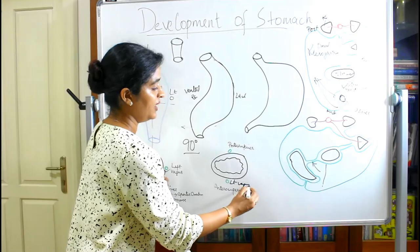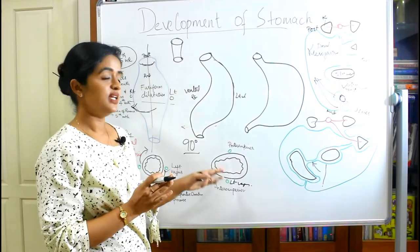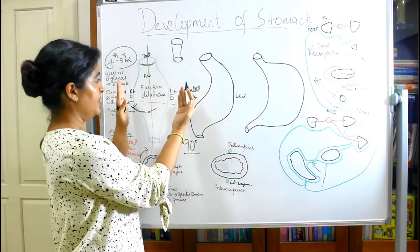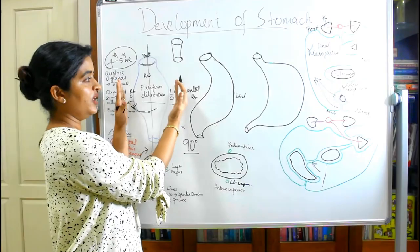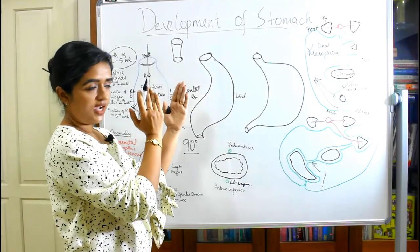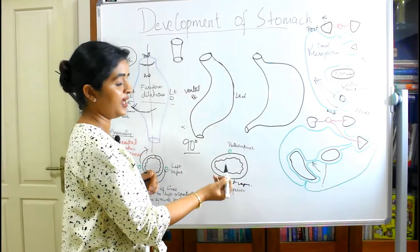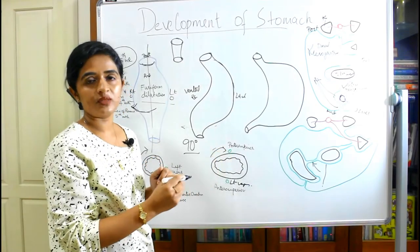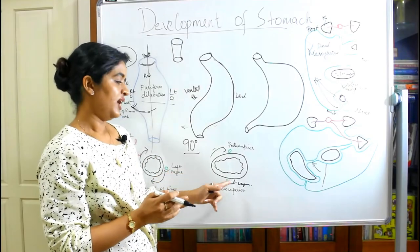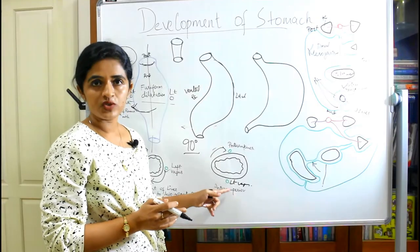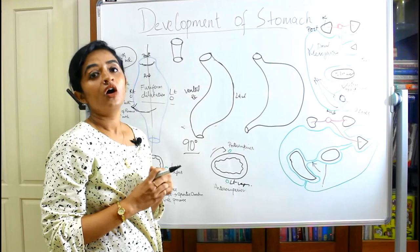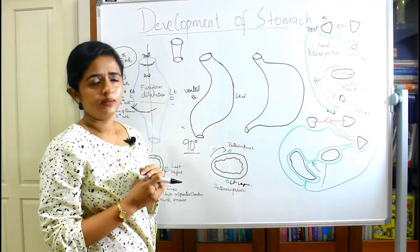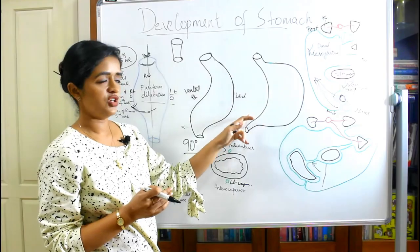With this 90-degree rotation, the vagus nerves also rotate. The left vagus nerve, which was on the left side, rotates anteriorly and is now called the anterior vagal trunk, supplying the anterior superior portion of the stomach. The right vagus nerve rotates posteriorly and is called the posterior vagal trunk, supplying the posterior inferior portion of the stomach.